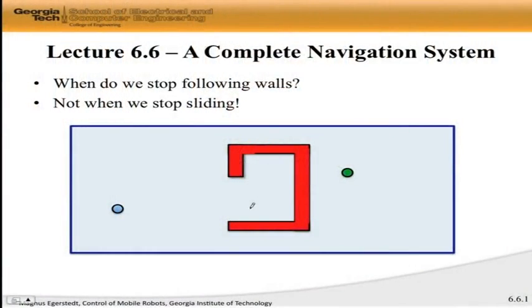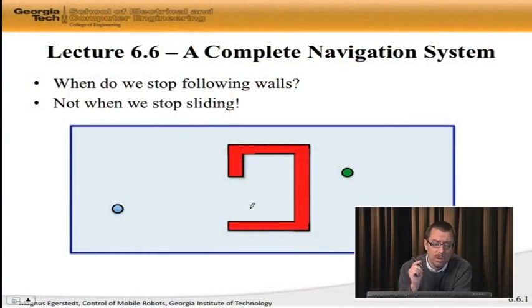The missing piece of the navigation puzzle was follow walls. And now we have it, in the sense that we know how to move along boundaries of obstacles. We also know which direction to go in, and that was given by this sliding condition. The one thing we don't know though is when to stop.